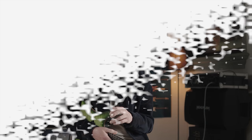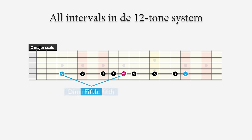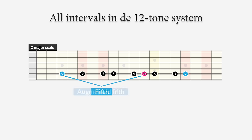The fifth has even more variations. It can be the distance between C and G, which is seven half steps — we call this a perfect fifth because it's a pleasant consonant sound. There's also a fifth between C and G-flat — six half steps — which we call a diminished fifth. And there's a fifth between C and G-sharp with eight half steps, which we call an augmented fifth or sharp fifth.